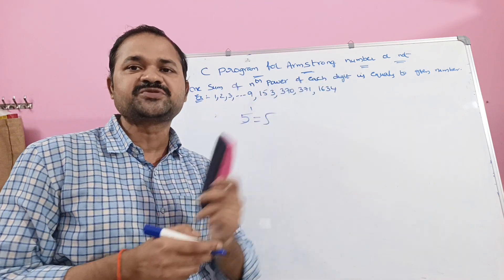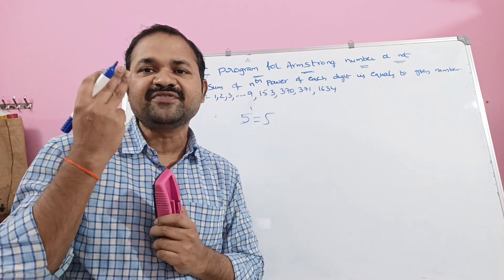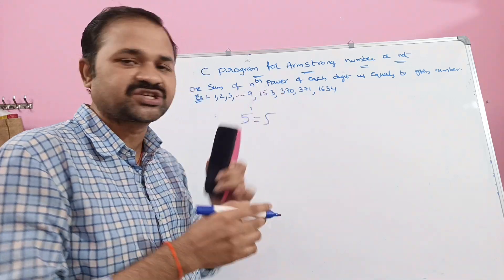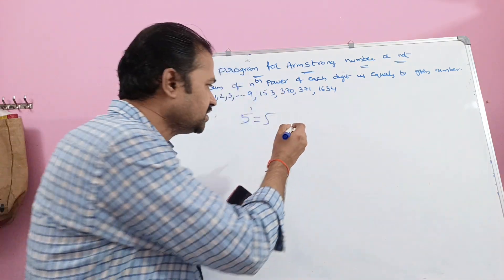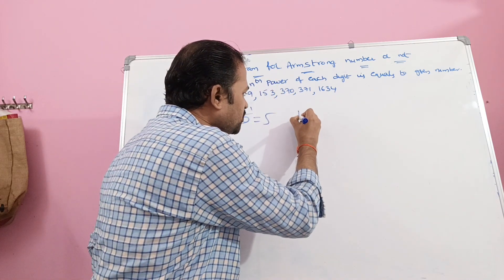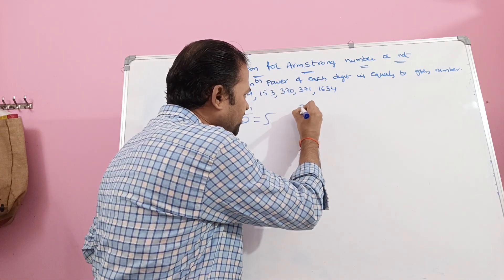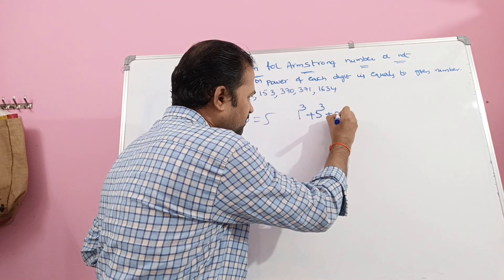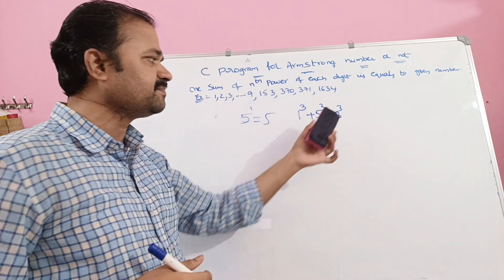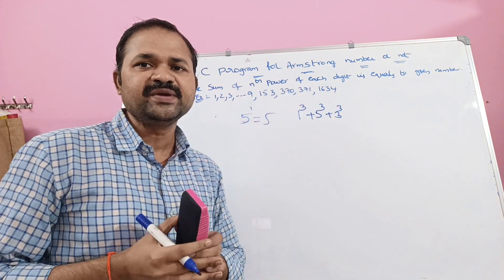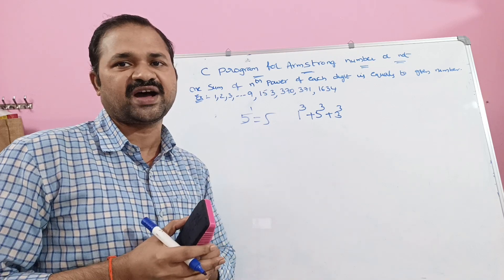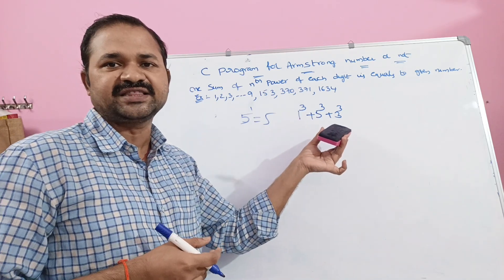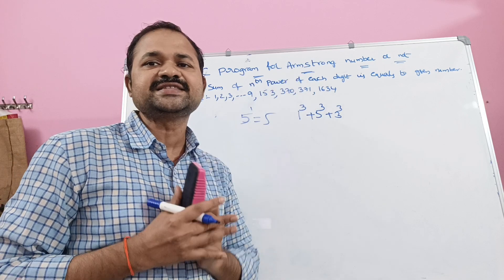Next, 153 is an Armstrong number. Why? Because 153 has 3 digits, so we have to raise each digit to the power 3. We perform: 1 cube plus 5 cube plus 3 cube. So 5 cube means 125, 3 cube means 27, 1 cube means 1. So 125 plus 27 plus 1 is equal to 153, which is the given number.